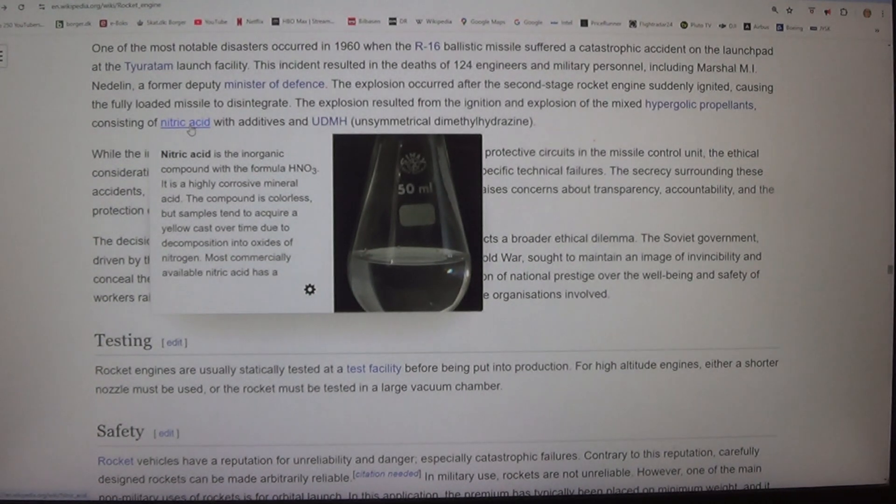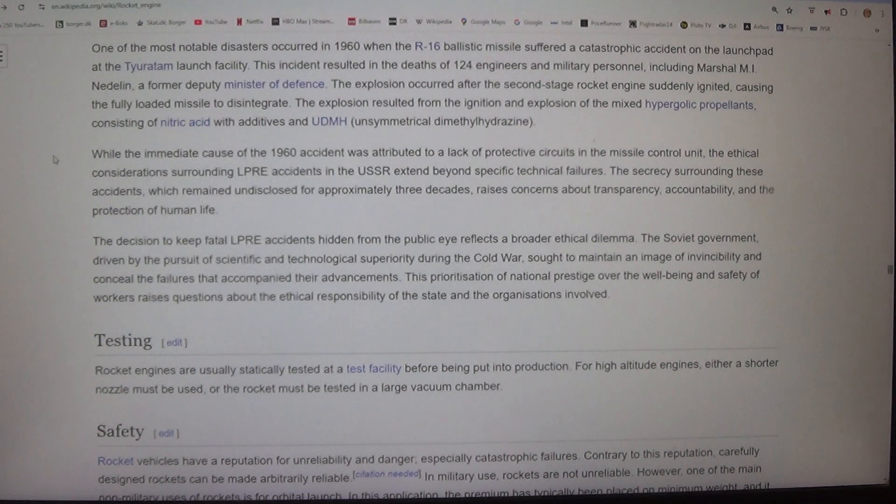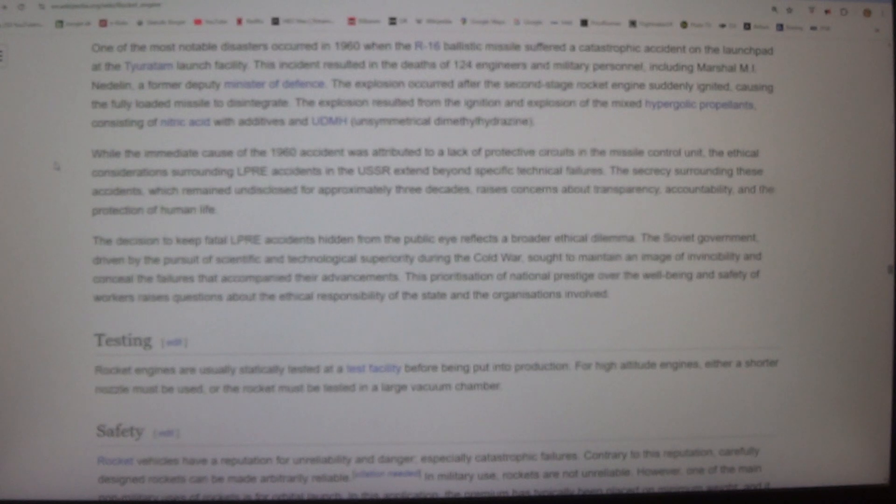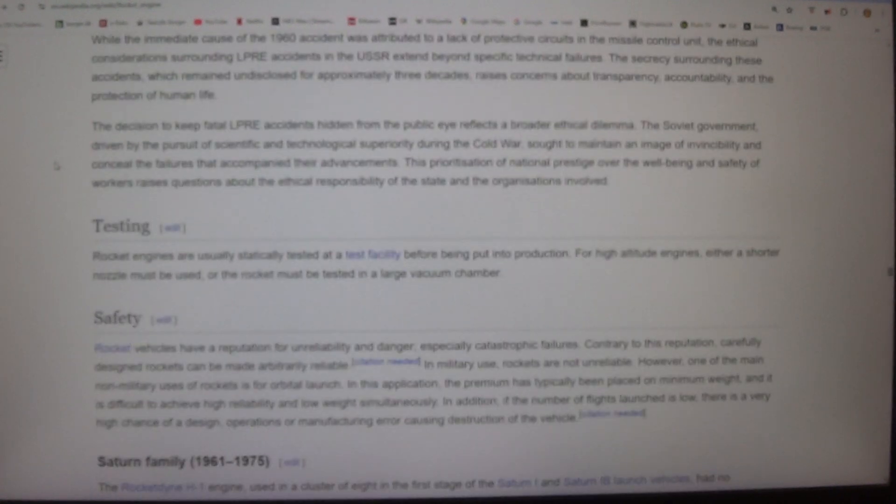While the immediate cause of the 1960 accident was attributed to a lack of protective circuits in the missile control unit, the ethical considerations surrounding LPRE accidents in the USSR extend beyond specific technical failures. The secrecy surrounding these accidents, which remained undisclosed for approximately three decades, raises concerns about transparency, accountability, and the protection of human life.